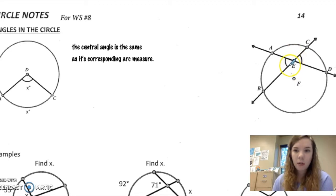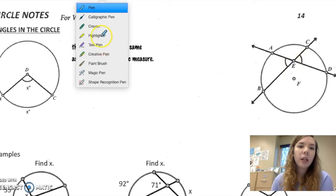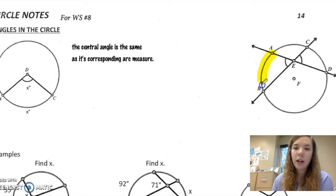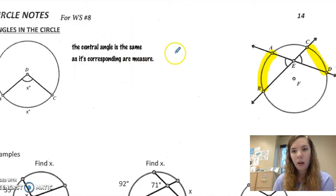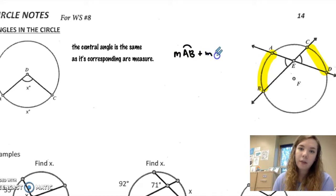But it does do something interesting to our arc measures here, AB and CD. If you take the arc measure of AB and the measure of CD and divide by 2, or you find the average,